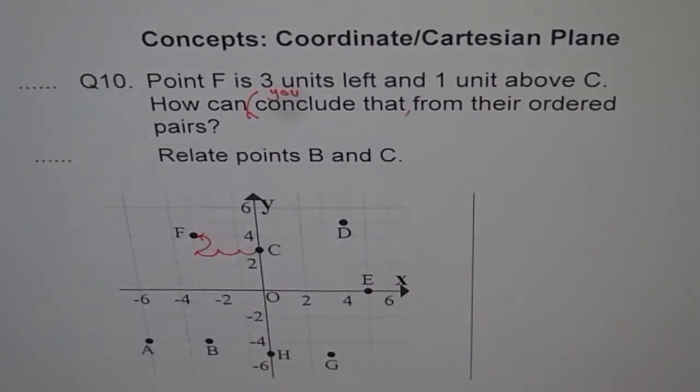So how can you conclude from their ordered pairs that F is 3 units left and 1 unit above? To answer this question, what should you do? Write down their ordered pairs.